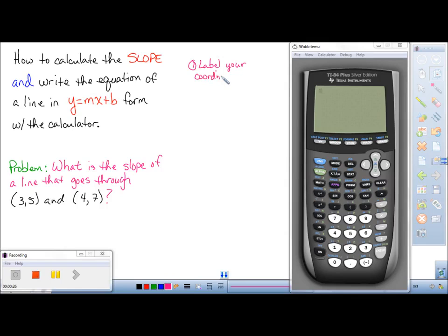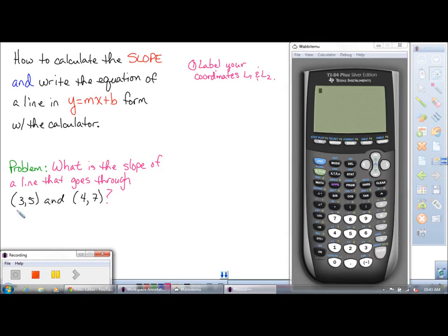What we're going to do is we're going to create a list in our calculator. And we're going to put our x values under list 1 and our y values under list 2. So we'll go through and label the x values as L1 and our y values as L2.